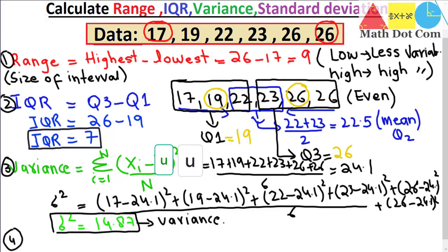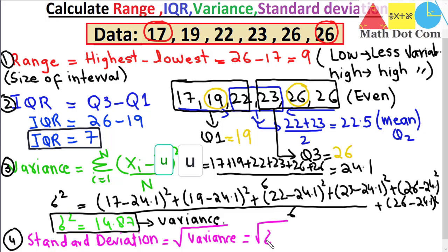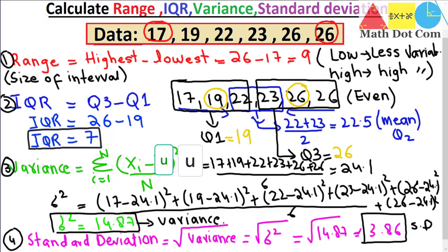The last measure of variability is standard deviation, which uses the same formula as variance — you just need to take the square root of the variance. So standard deviation equals the square root of σ², which is the square root of 14.87, approximately equal to 3.86. This is how you can find range, interquartile range, variance, and standard deviation of a given data set quickly. That's all from today's lecture. Thank you.